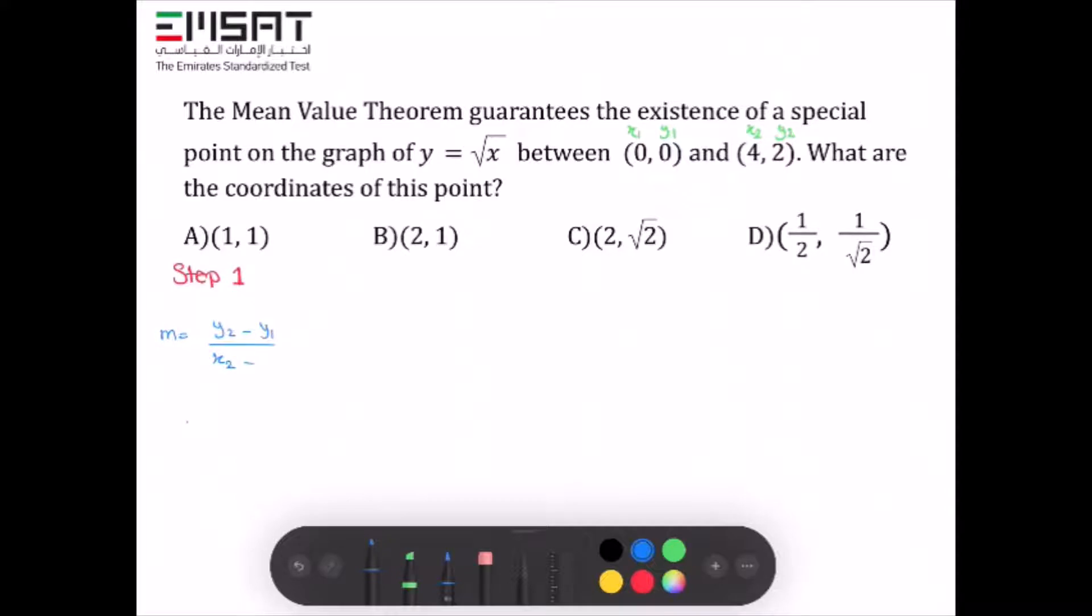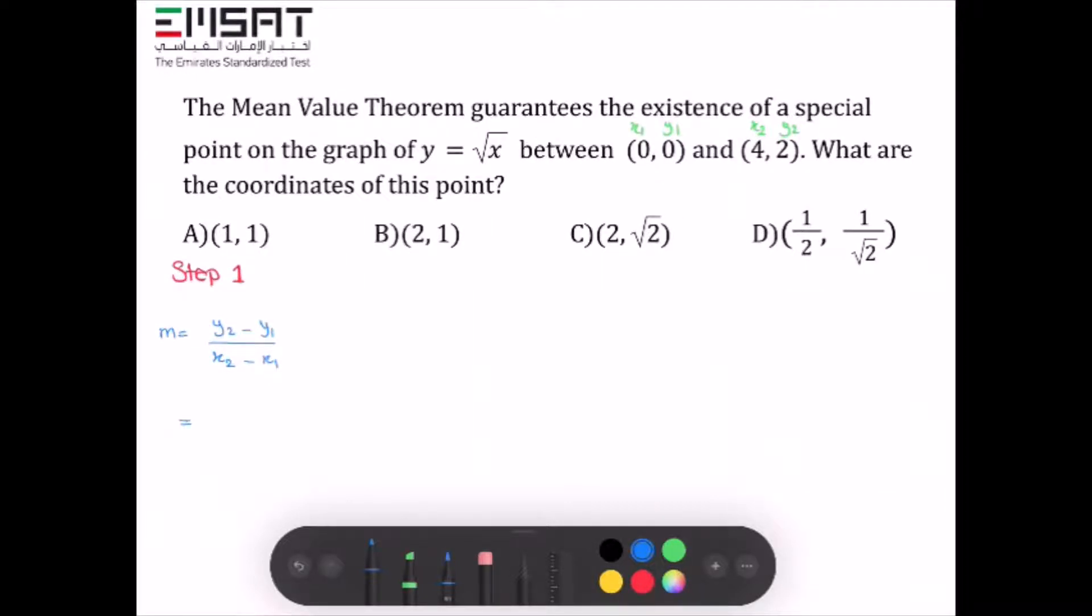Now evaluate using the given points. We have (2 - 0) / (4 - 0). Using a calculator, we end up with 1/2.